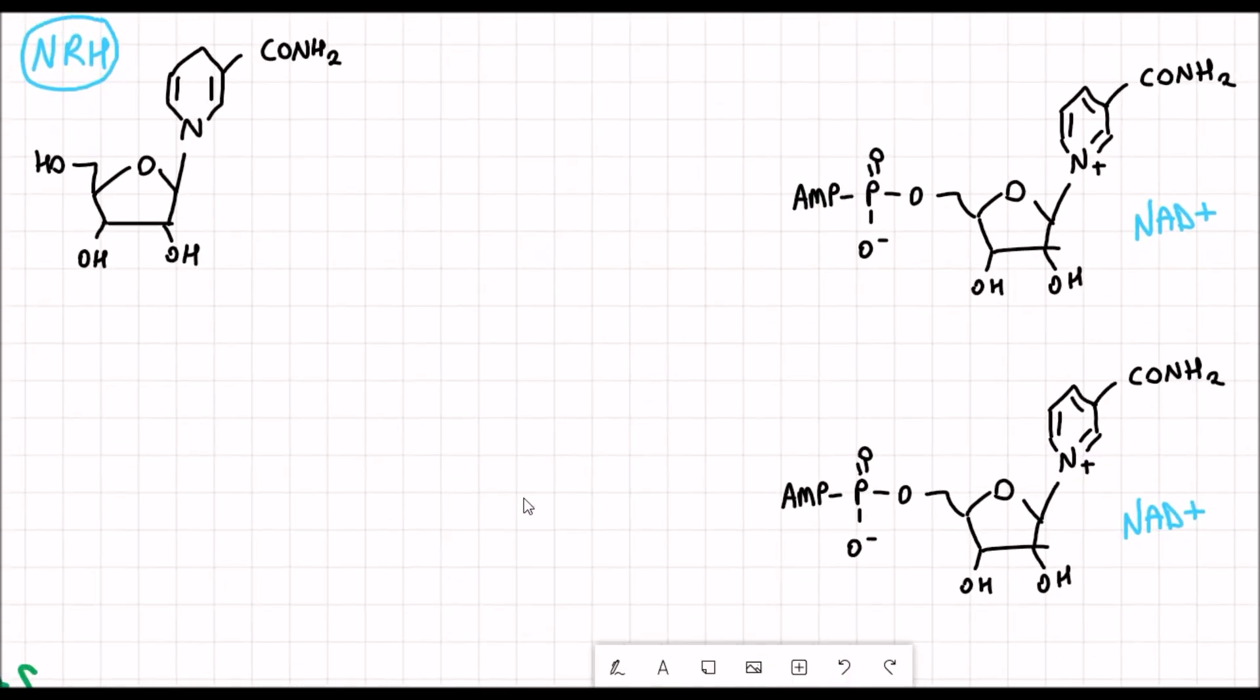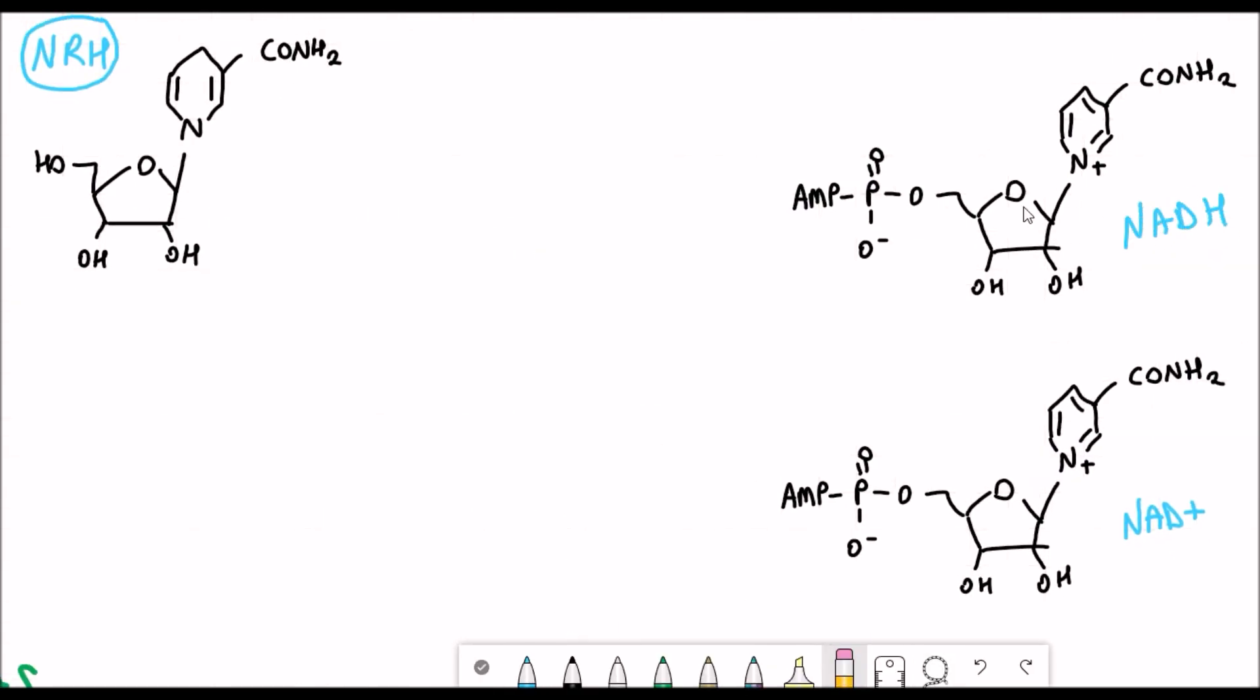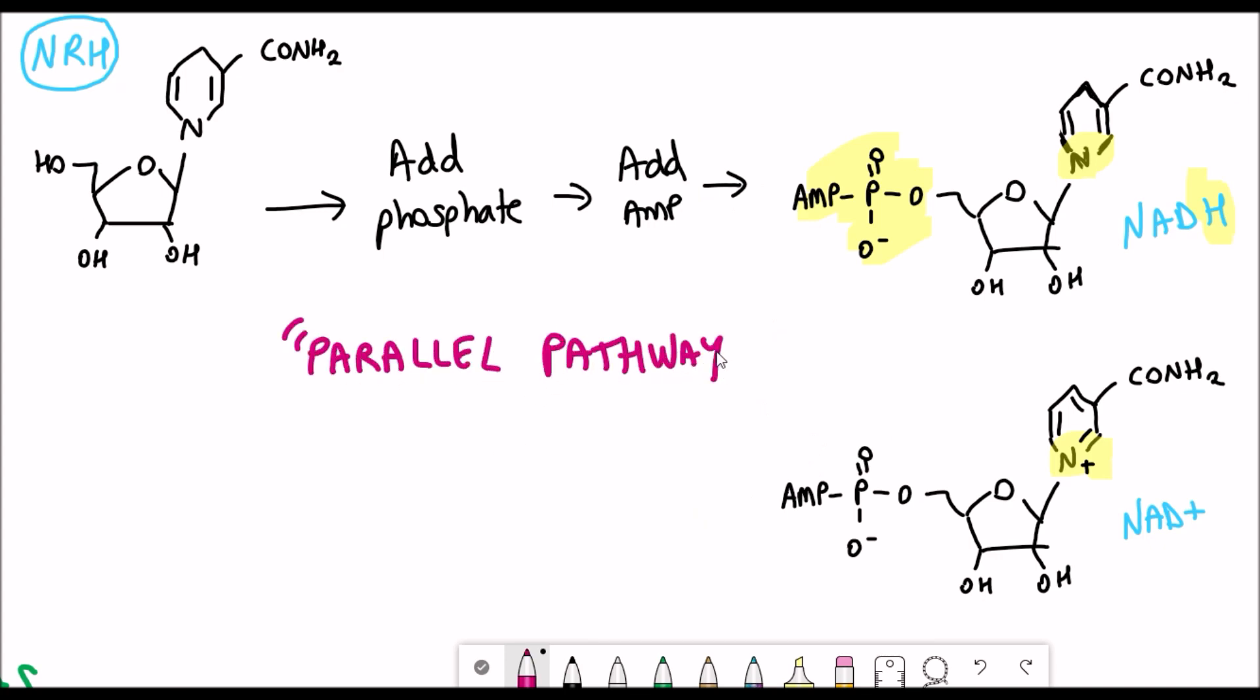I've drawn out here the structure of NRH and also NAD plus. If we work backwards, to go from NAD plus to NADH you need to reduce that nitrogen that I've highlighted in yellow, and then to get from NRH to NADH you need to add phosphate and also add AMP to the structure to get NADH.